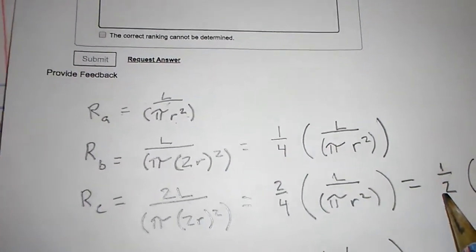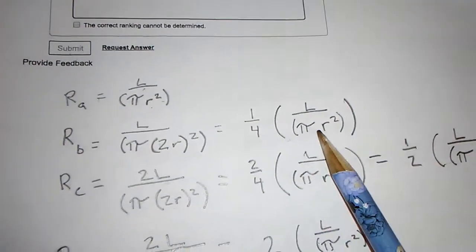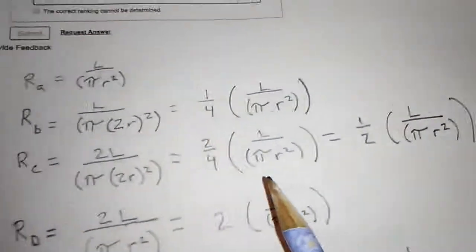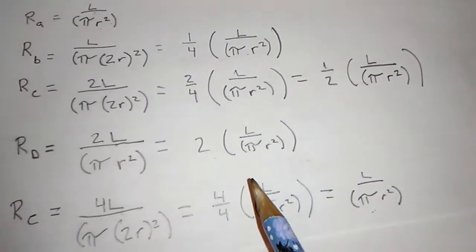C will be, or let's go to B. B will be one fourth of the resistance of that one. C is one half of the resistance of the other ones.